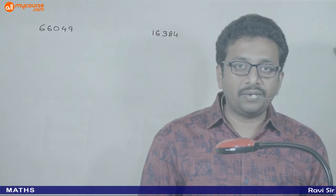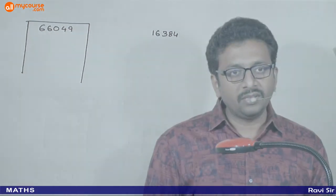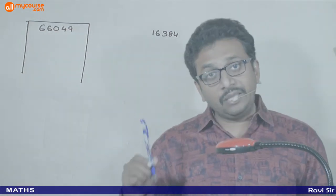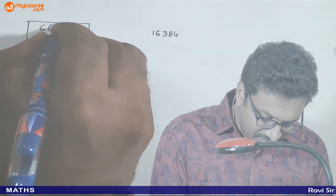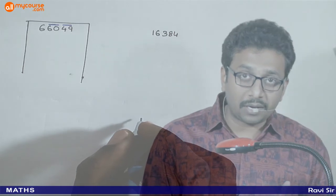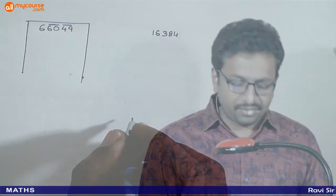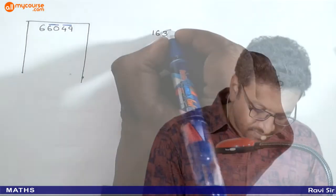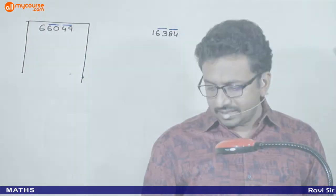Let us find the square roots of these two numbers. First step: draw a box and start pairing from the unit's digit. For 66049 (5 digits, odd), pairing gives 6 | 60 | 49, so 6 is left out. For 16384 (5 digits, odd), pairing gives 1 | 63 | 84, so 1 is left out.